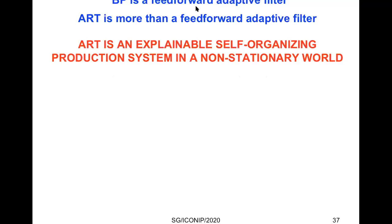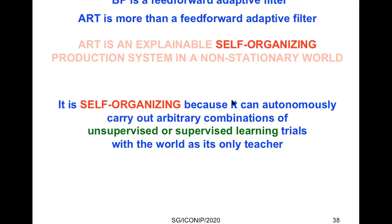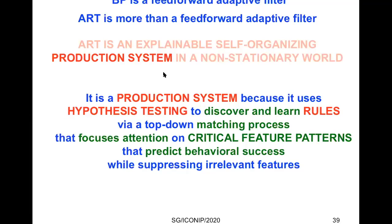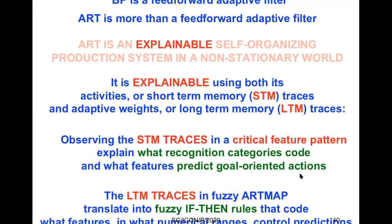Backpropagation and deep learning are a feed-forward adaptive filter, but ART is more than that. ART is an explainable self-organizing production system in a non-stationary world. ART is self-organizing because it can autonomously carry out arbitrary combinations of unsupervised or supervised learning trials with the world as its only teacher. It's a production system because it uses hypothesis testing to discover and learn rules by a top-down matching process that focuses attention on critical feature patterns — patterns that predict behavioral success while suppressing irrelevant features.